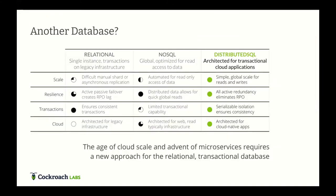So why do we need another database? We've had relational databases, and over the past 10 years NoSQL databases came along. Those NoSQL solutions like MongoDB were optimized for reads and global access, but they took compromises in how they implemented transactions. Neither of these solutions was architected for multi-data-center cloud, or to survive across regions. And so there is room for another database — this is the emergence of distributed systems over the past five to ten years.